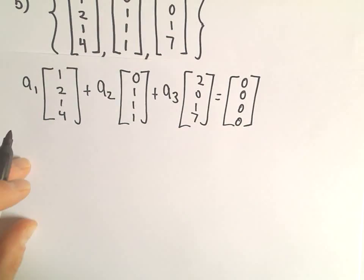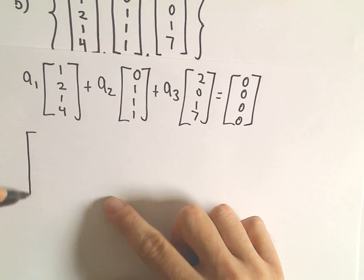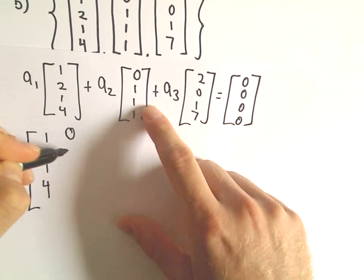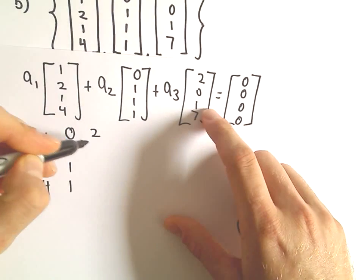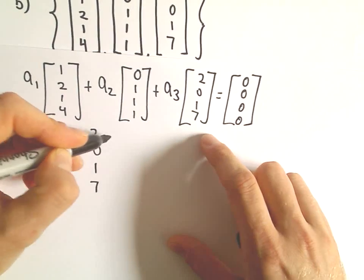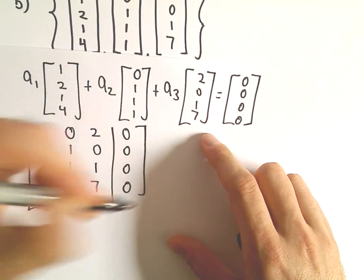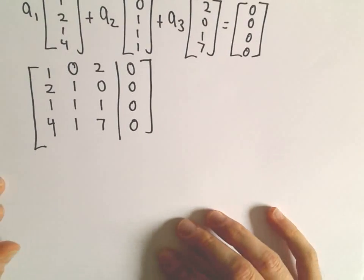But we're trying to decide if we have non-trivial solutions or not. So I'm going to write my matrix: 1, 2, 1, 4; 0, 1, 1, 1; 2, 0, 1, 7; and then 0, 0, 0, 0. So a little more tedious, but hopefully it won't be too bad.